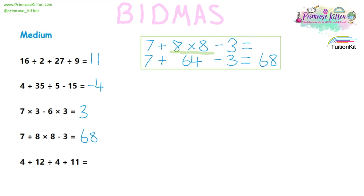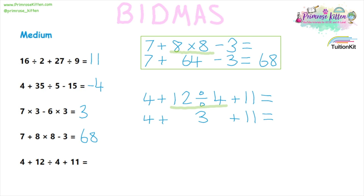Our last one for the medium level here, with harder questions coming up next. Four plus 12 divided by four plus 11. The first thing that needs to be done is the division in the middle. So 12 divided by four will give us three. The sum then becomes four plus three plus 11, giving us 18.